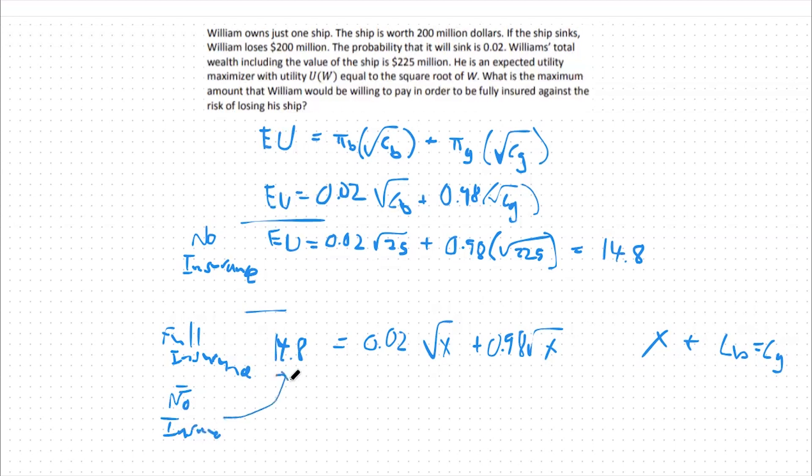So right here, this would be our no insurance. This would be our full insurance case. From there, we can add like terms and say that 14.8 will equal the square root of x. Square both sides. Our consumption in both states of the world under full insurance should be 219.04.